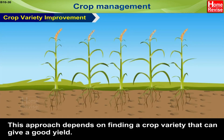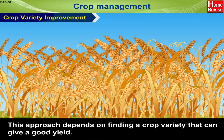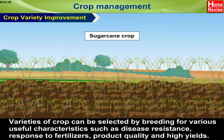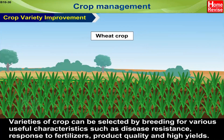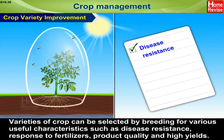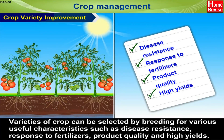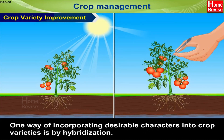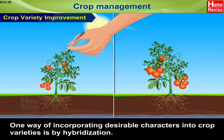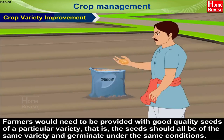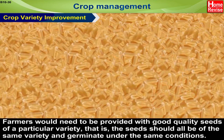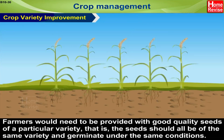Crop variety improvement: this approach depends on finding a crop variety that can give a good yield — lots of research will have to be done for this. Varieties of crop can be selected by breeding for various useful characteristics such as disease resistance, response to fertilizers, product quality, and high yields. One way of incorporating desirable characters into crop varieties is by hybridization. Farmers would need to be provided with good quality seeds of a particular variety — seeds should all be of the same variety and germinate under the same conditions.